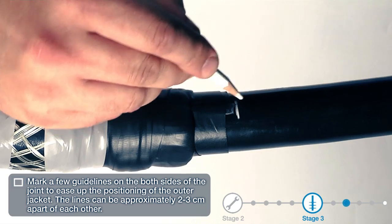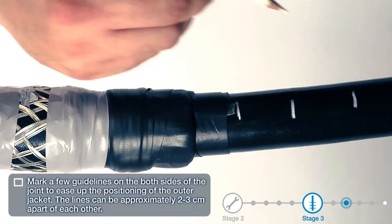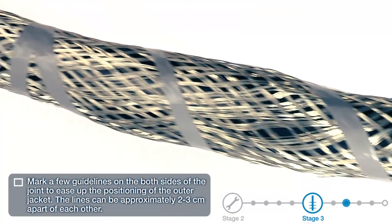Mark a few guide lines on both sides of the joint to ease up the positioning of the outer jacket. The lines can be approximately 2 to 3 centimeters apart.